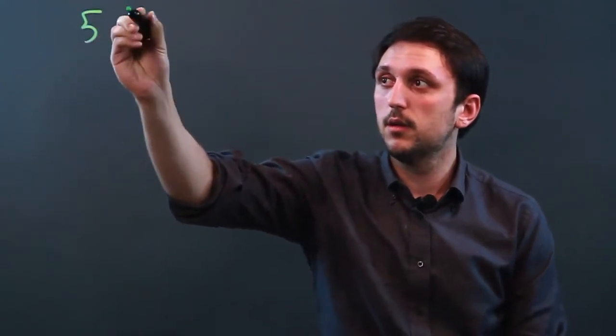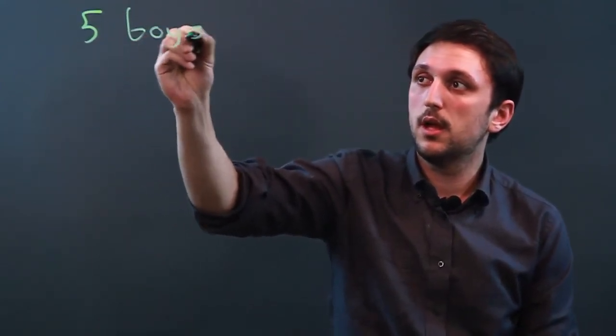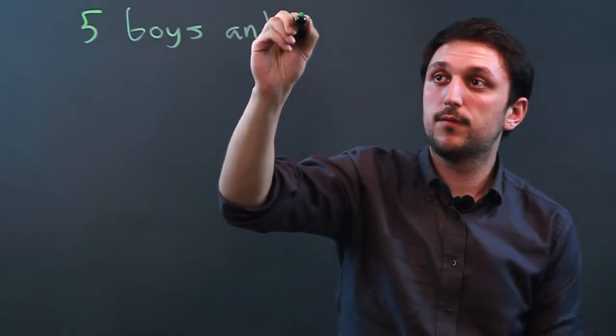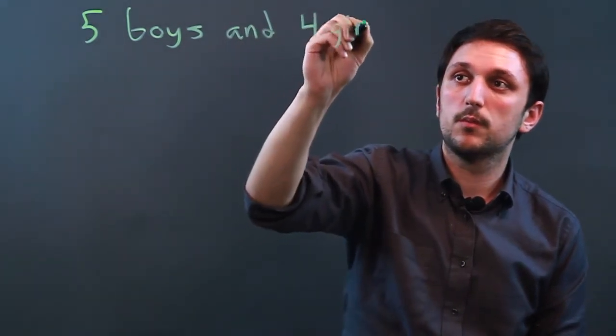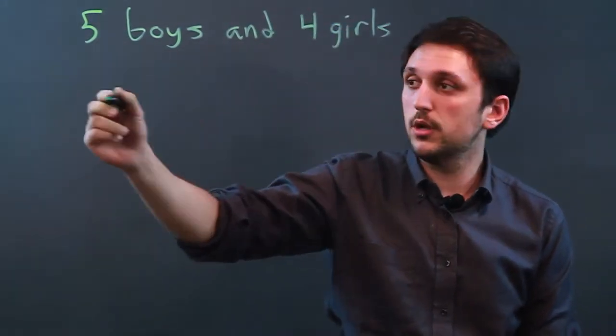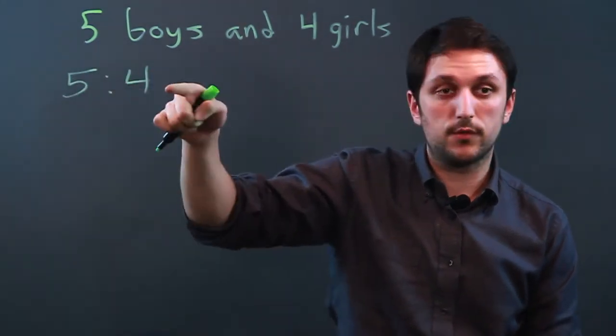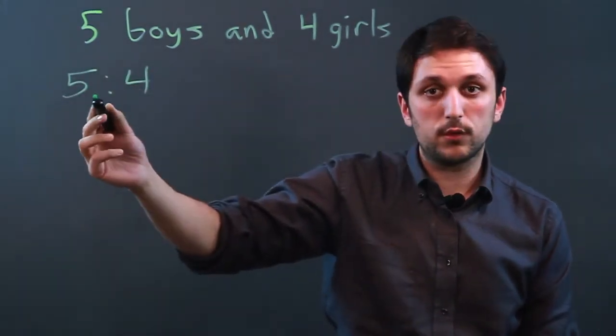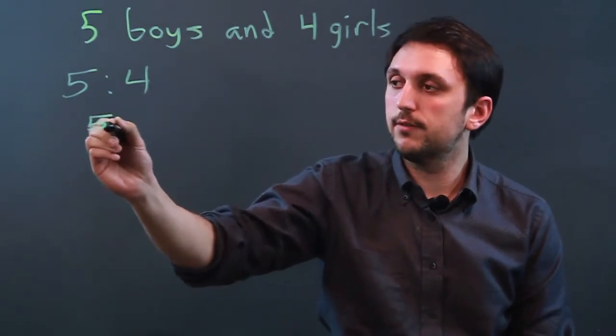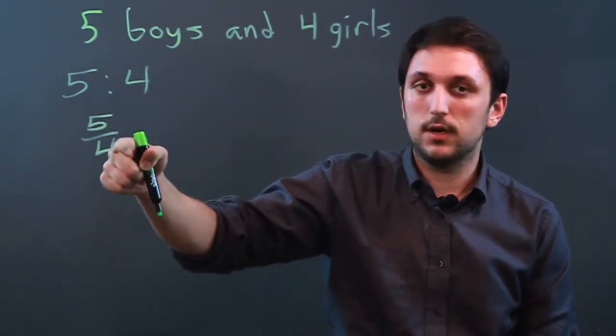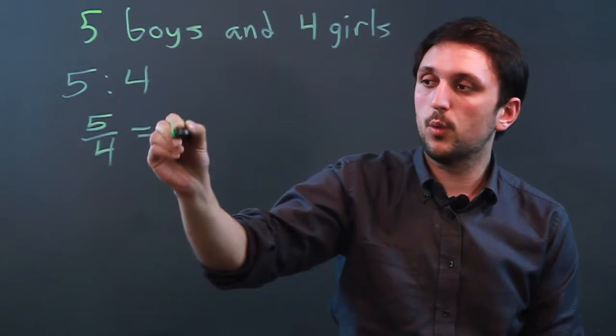So let's say there are five boys and four girls. Well, then the ratio is five to four, five boys for every four girls. You can also express this as a fraction, which is five over four, five to four, which equals 1.2.